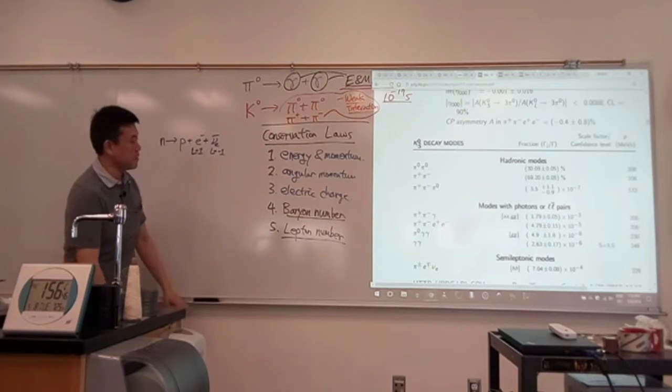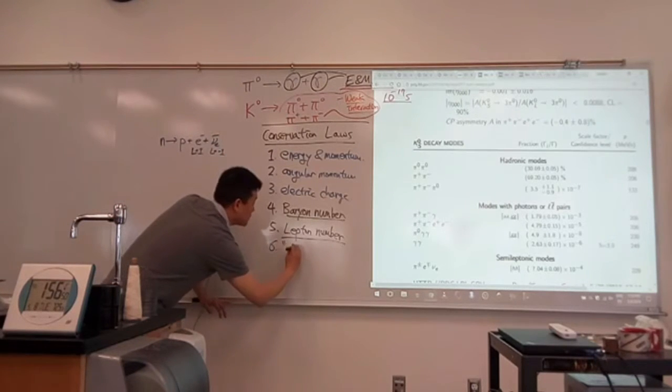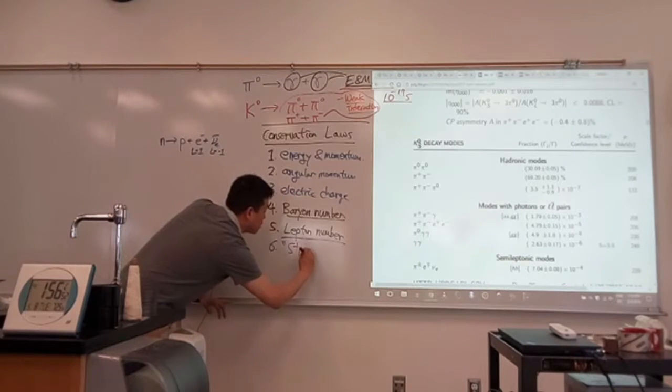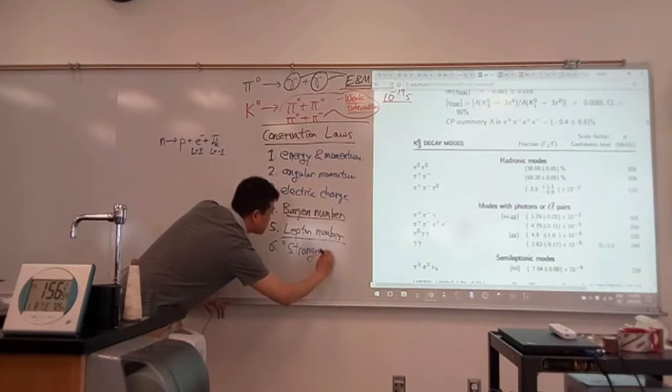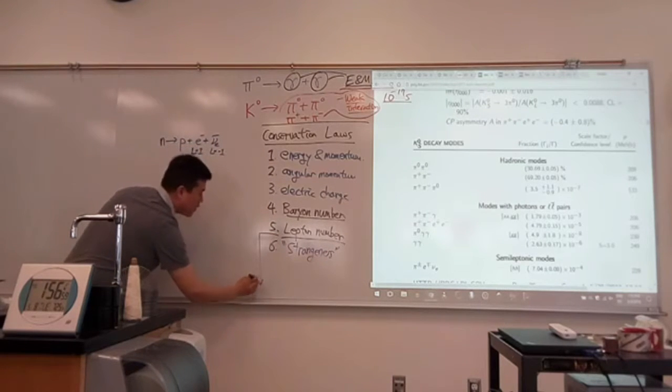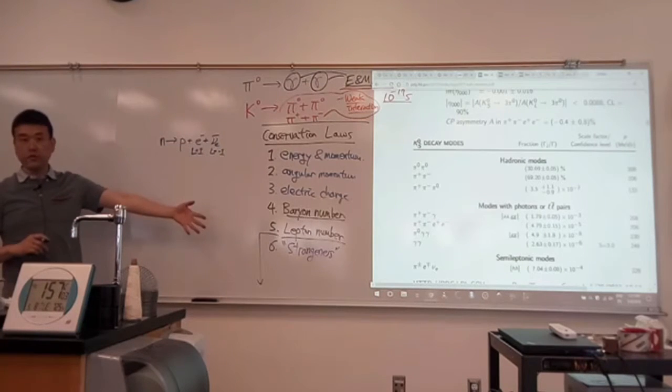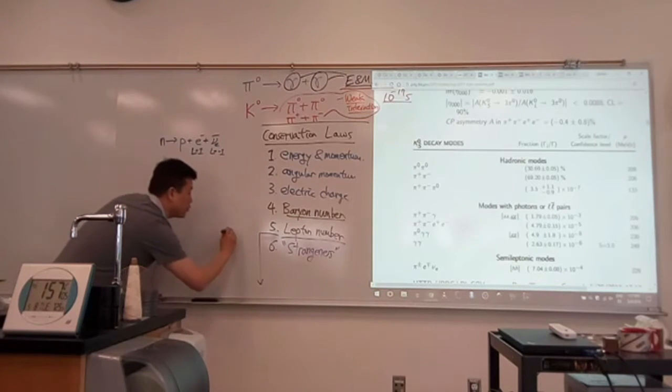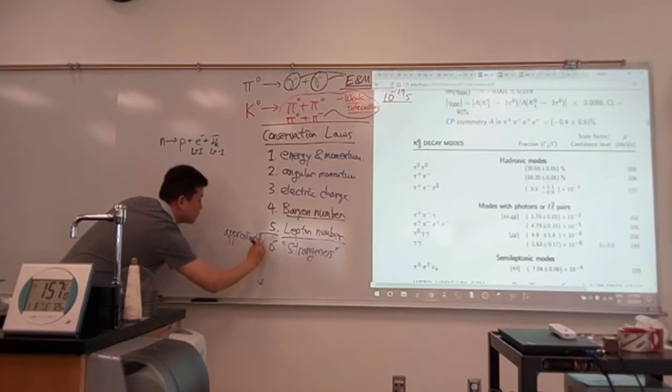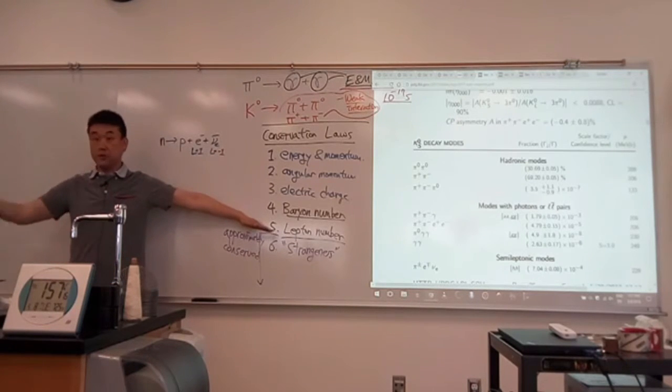So let me just start adding to this conservation laws. So sixth one is conservation of something that they chose to call strangeness. And what I'll say is that from here on, what we are going to conserve the quantity we are going to introduce, they are only going to be approximately conserved. No longer absolutely conserved. So up to this point here, they are absolutely conserved.